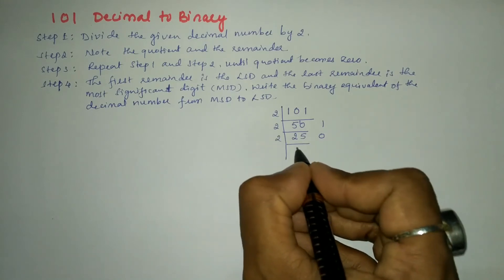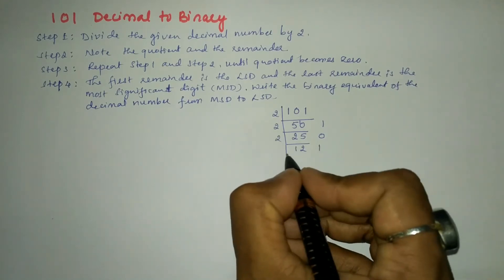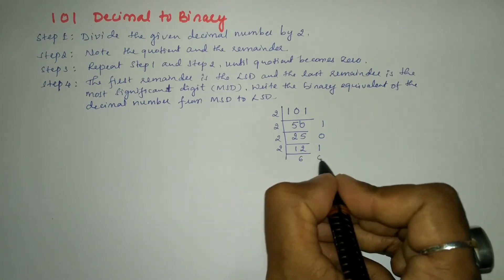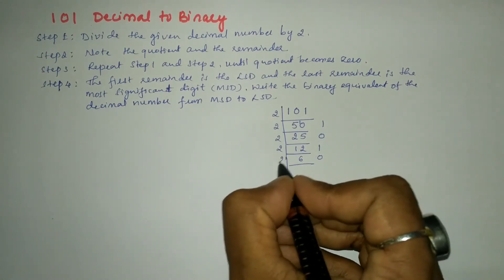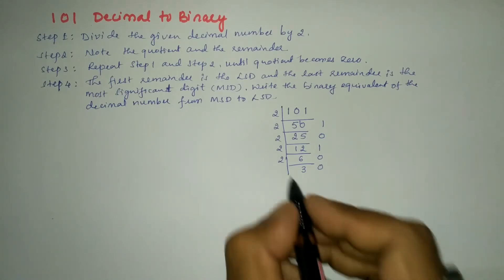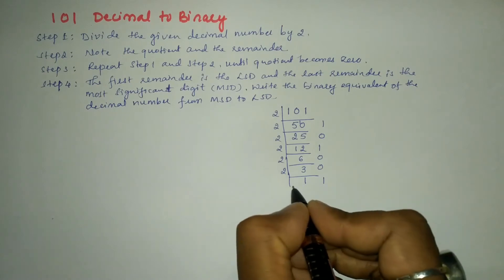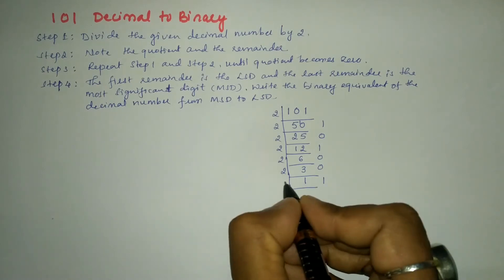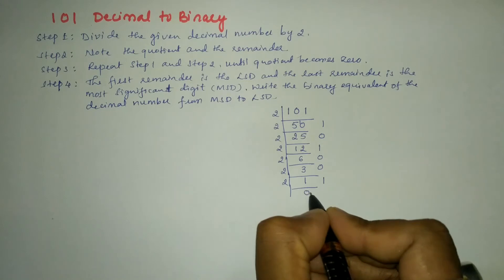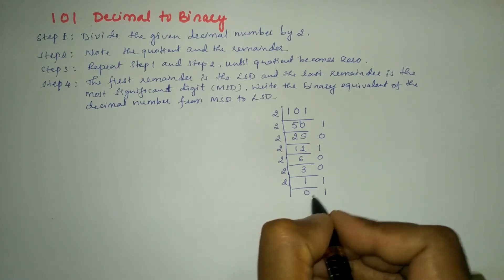Next: 2 ones, 2 twos are 4, remainder is 1. 2 sixes are 12, remainder is 0. 2 threes are 6, remainder is 0. Again 2 ones are 2, remainder is 1. Here 1 cannot be divided by 2, hence quotient will be 0 and this 1 will become the remainder.